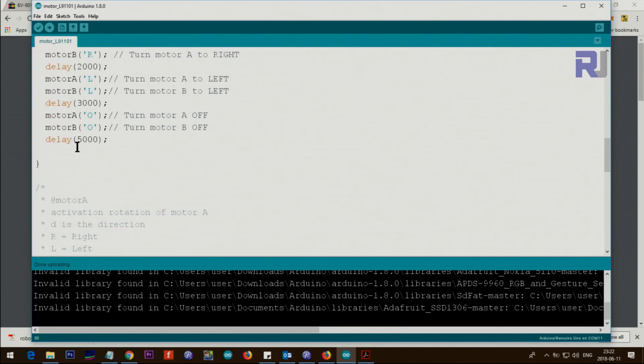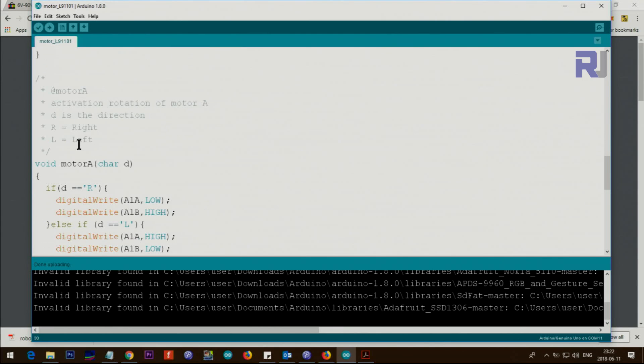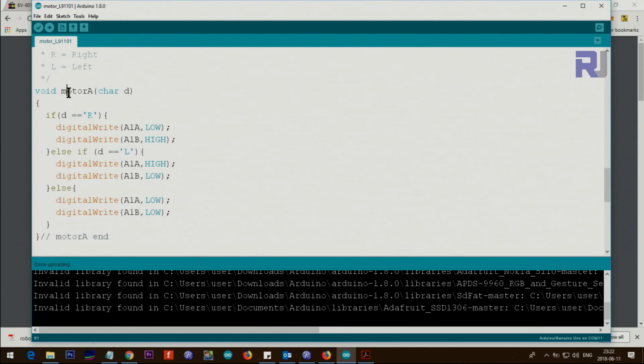You put R, L, or O and this will turn off the motor. Then this is for motor B, so this is for motor A and that's for motor B, and it continues like that. Let me explain the motor A. Motor A and motor B are the same.